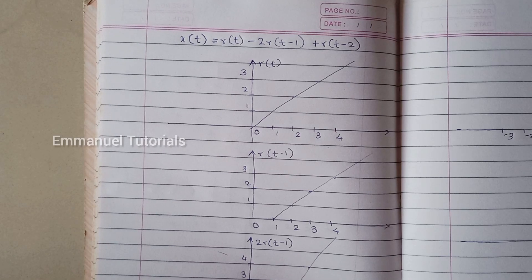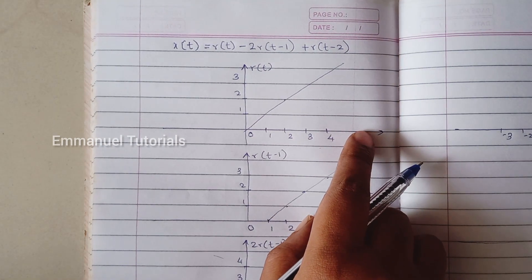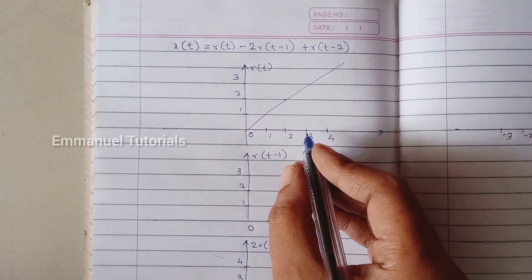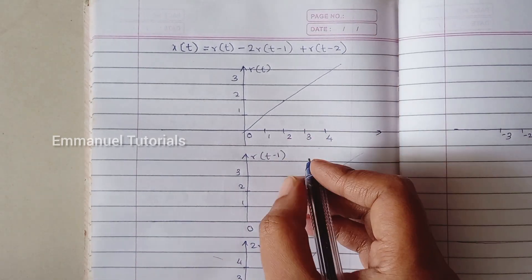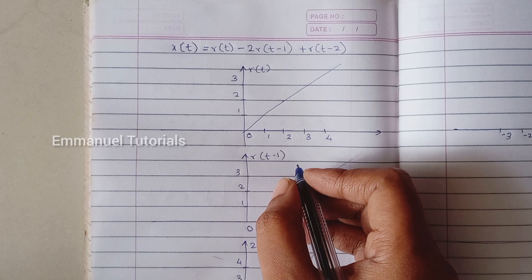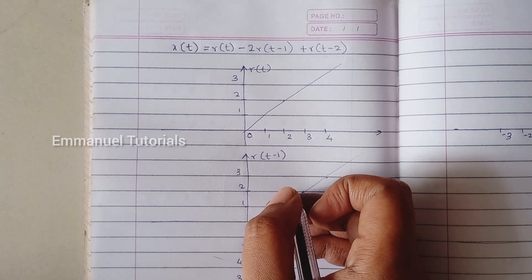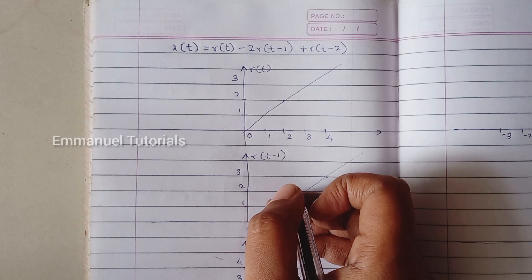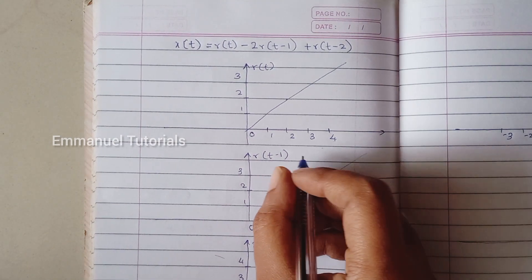Hello everyone, welcome back to Emanuel Tutorials. Today we will be seeing a sketch the signal example which was asked by multiple students in our comment section. It's a ramp example. Before we start, please do like, share and subscribe to Emanuel Tutorials for more. If you have any doubts related to signals and systems or any other concept in electronics or computer science engineering, please do let us know in the comments and we will try to help you. So, let's start.